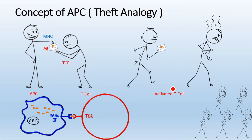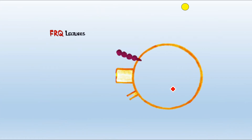Now T cells are activated and it's their turn to activate something else — the B cell. They have the ability to activate B cells, and more specifically they are known as helper T cells because they help other cells get activated. We are now moving towards B cell activation. The B cell has many receptors, and the yellow thing you can see is a pathogen — any viral, fungal, or bacterial particle causing problems in our body.